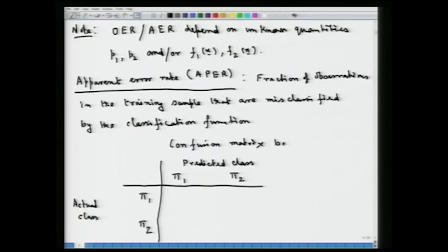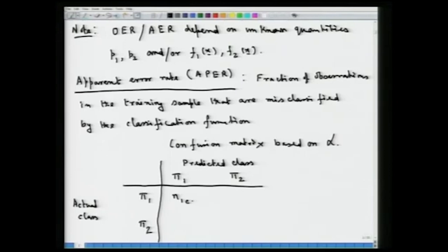This confusion matrix is based on the learning sample L. n1c is the number of observations coming from the first population pi1 and being correctly classified by the classification rule — that is, the predicted class membership is pi1 for observations actually from pi1. n1m is the number of observations coming from the first population that are in the learning sample but are misclassified into the pi2 population by the classification function.